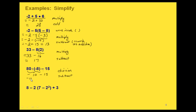Now we just have a subtraction. We can rewrite this as an addition: negative 10 plus the opposite of 15. Since these two values have the same sign, we're adding the absolute values together — 10 plus 15 gives us 25 — and then we take the sign that went with both, which was negative. So our answer is negative 25.